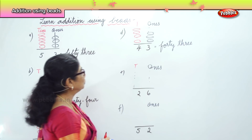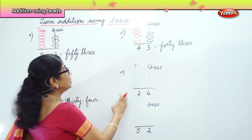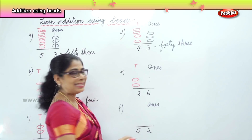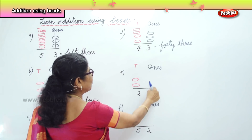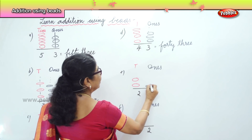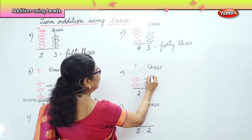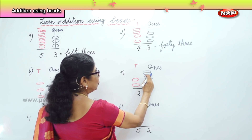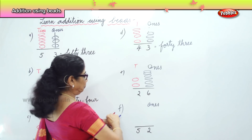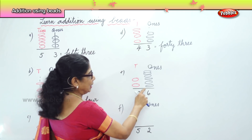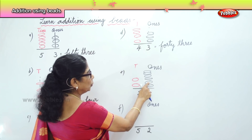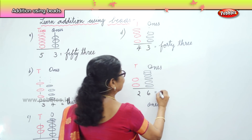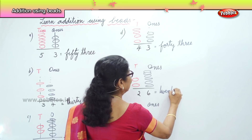Now look at this. Two — how many? Tens. Two tens. That means two beads: ten, twenty. Then how many blue beads? Six. One, two, three, four, five, and six. Now let's count: ten, twenty, twenty-one, twenty-two, twenty-three, twenty-four, twenty-five, and twenty-six. What is it? Twenty-six.